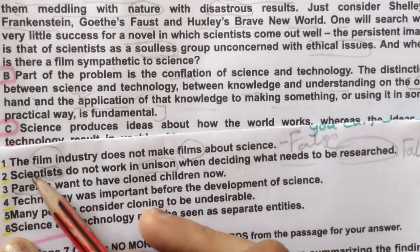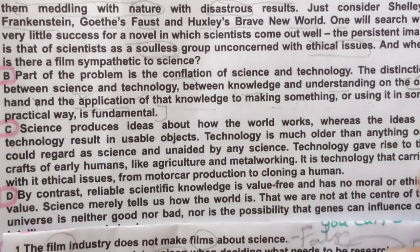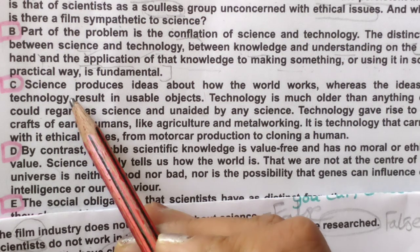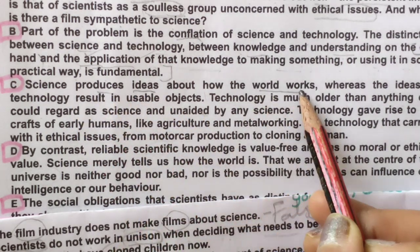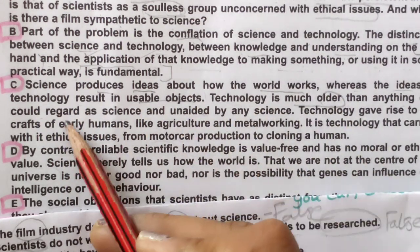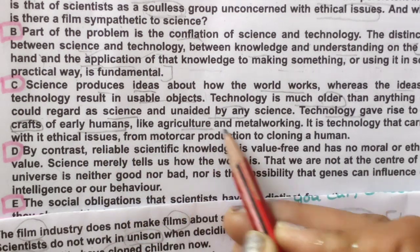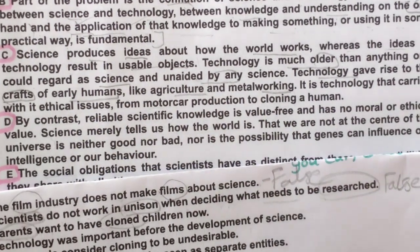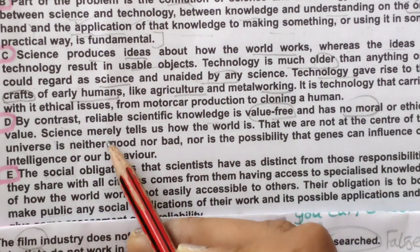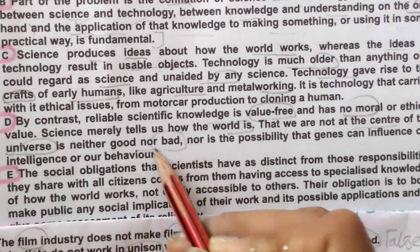Next, third: 'Parents want to have cloned children.' The keywords are 'parents,' 'cloned,' and 'children.' Science produces ideas of how the world works, where the ideas in technology result in usable objects. Technology is much older than science. Science is unaided by any science. Technology gave rise to crafts of early civilization like agriculture and metalworking. By contrast, reliable scientific knowledge is value free — no moral value — science merely tells us how the world is.